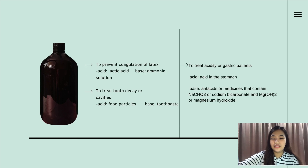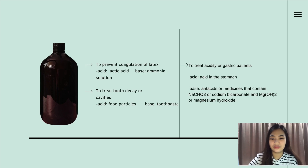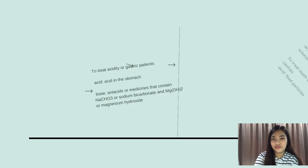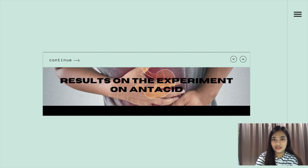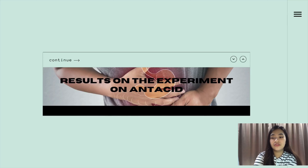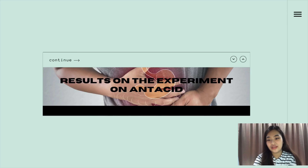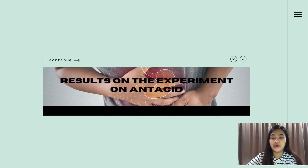Let us now proceed with our expected results on the experiment on antacids. For a quick overview, antacid is a class of medicine that neutralizes stomach acidity and treats acid reflux and heartburn. Examples of this are milk of Magnesia, Gaviscon, Cremil-S, and the typical sodium bicarbonate or baking soda.